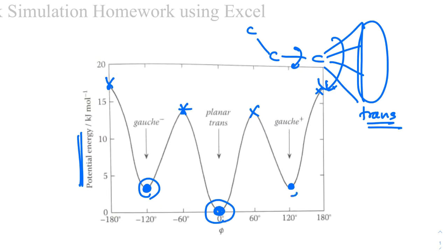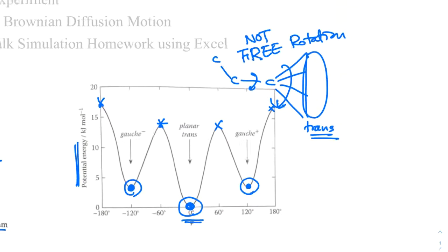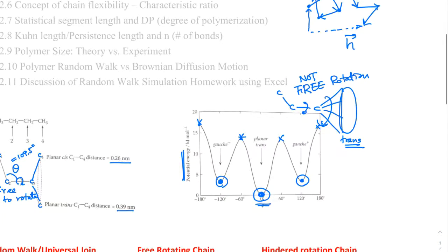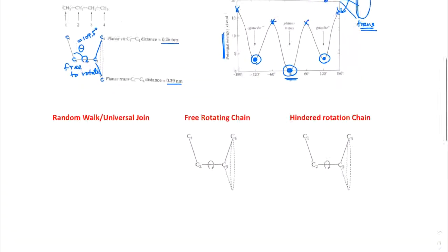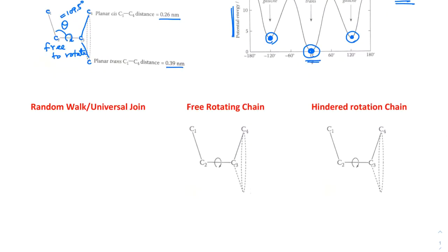So you have to consider the fact that this is not free rotation. There's a certain preference. There's a certain preference. And you have to consider the fact that they want to have certain preferences. So this one comes down to now three simple models. Remember, that's the random walk. This random walk model. And whereas this is, essentially, fixed bond angle. And, but it is free rotation. Okay. Free to rotate. And then this one.